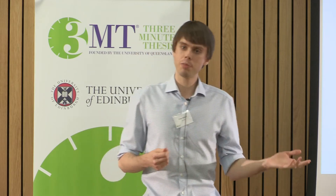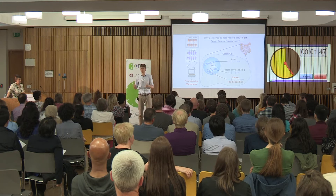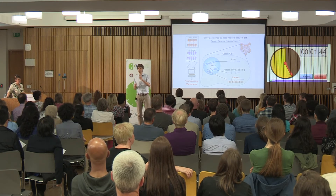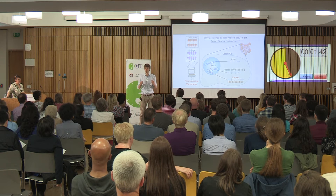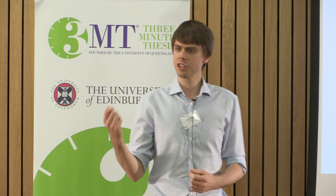To explain alternative splicing, let me take you back to the year 2000, when scientists first sequenced the whole human genome and were able to read every instruction written in every gene in our DNA. The scientists had originally estimated you would need a minimum of 100,000 different instructions in order to build a whole human. However, they only actually found 20,000 different genes.